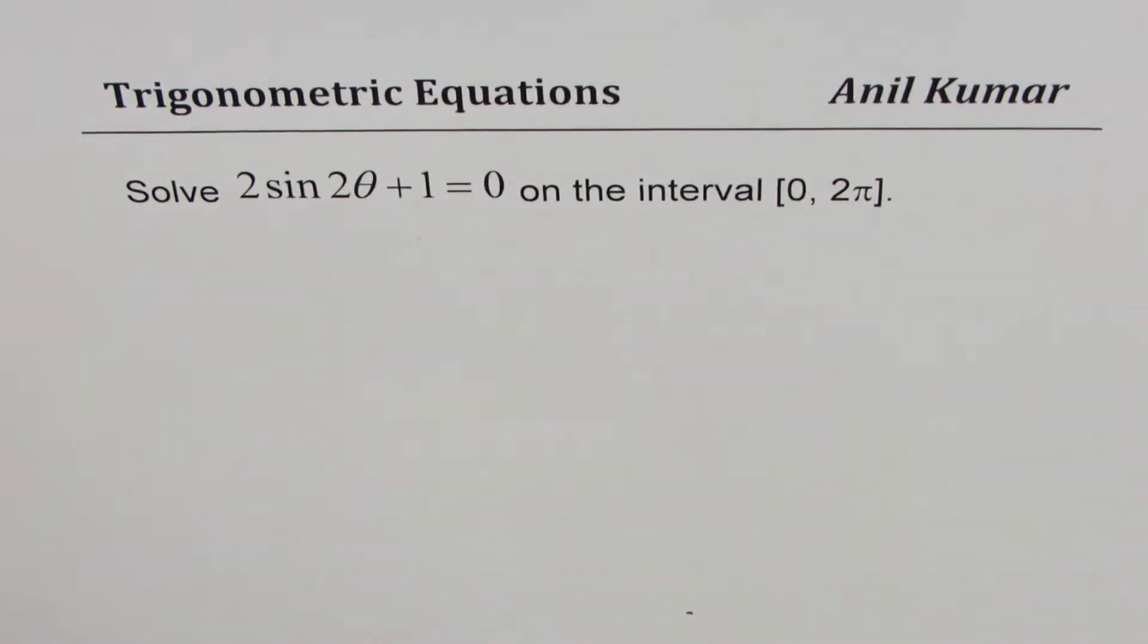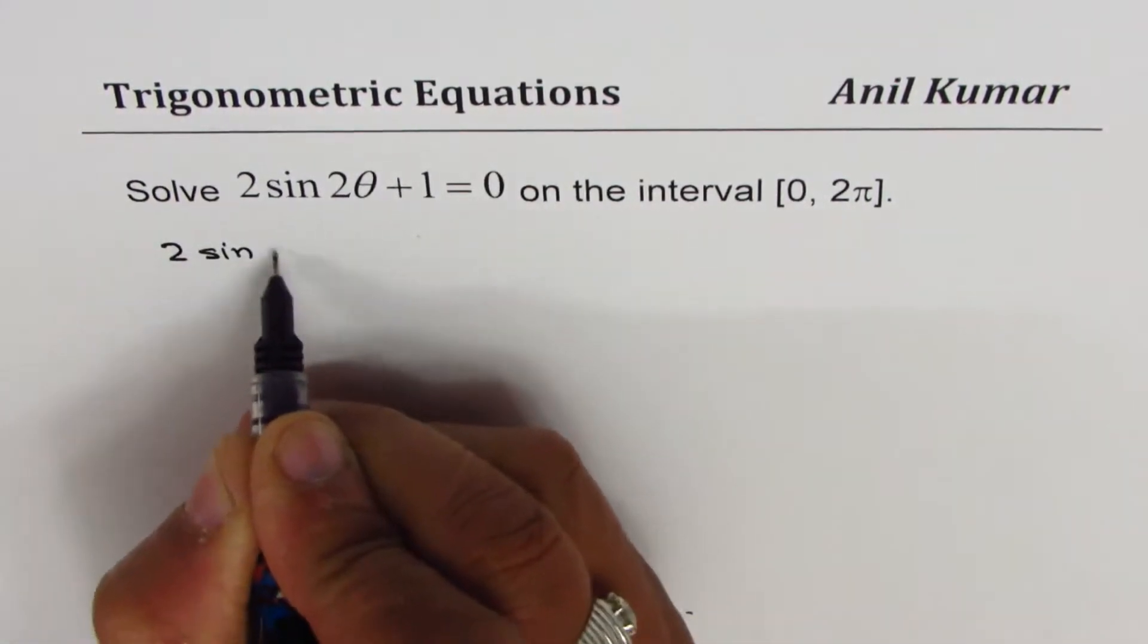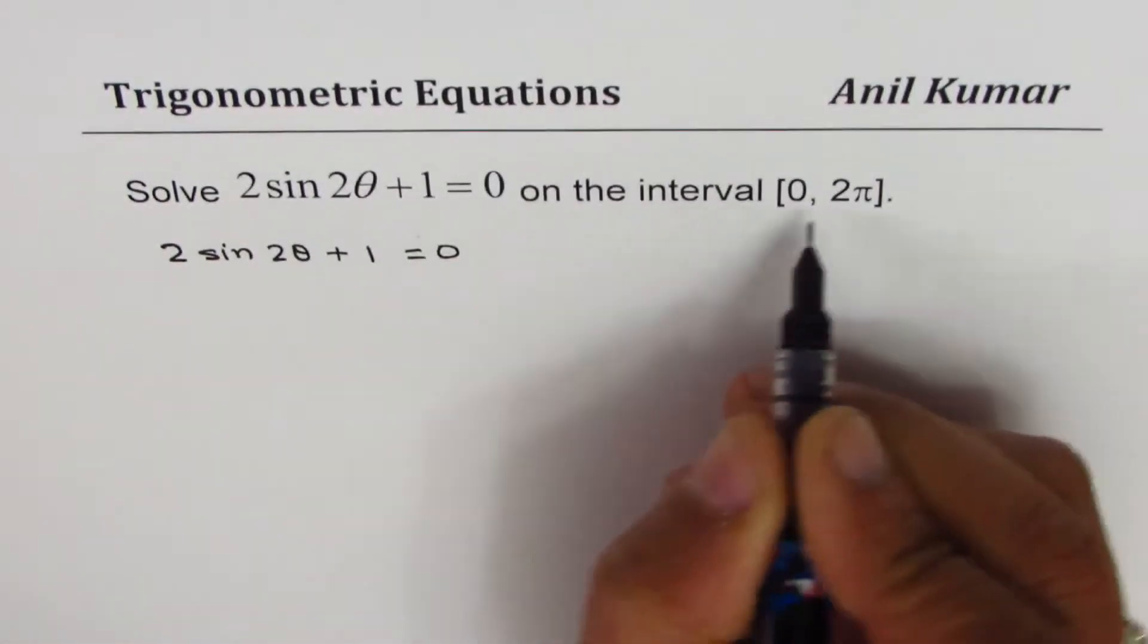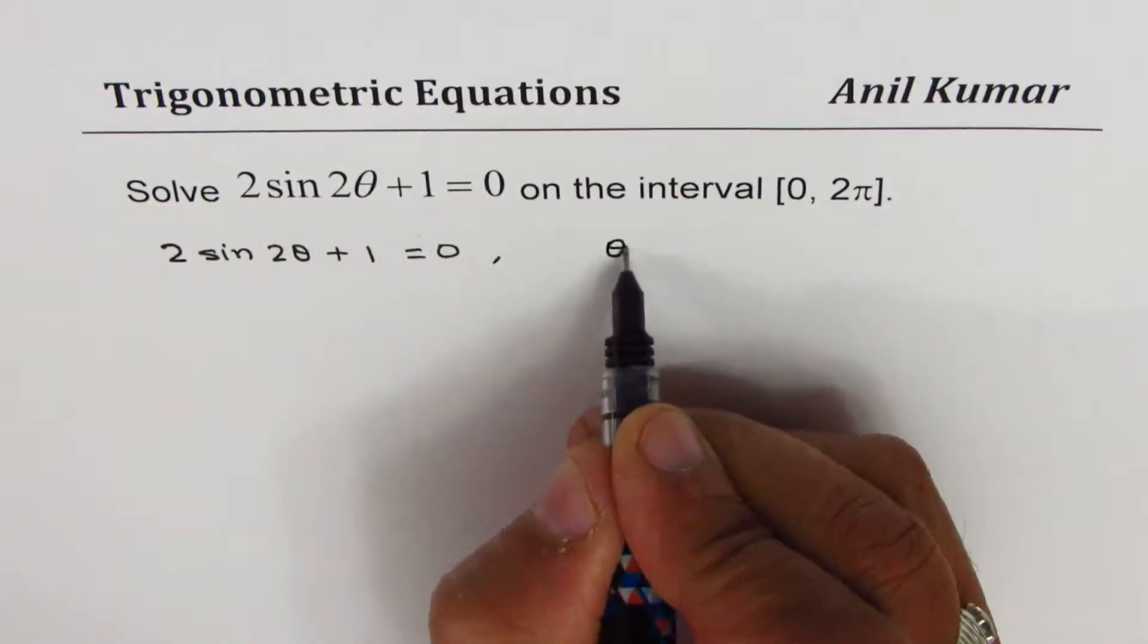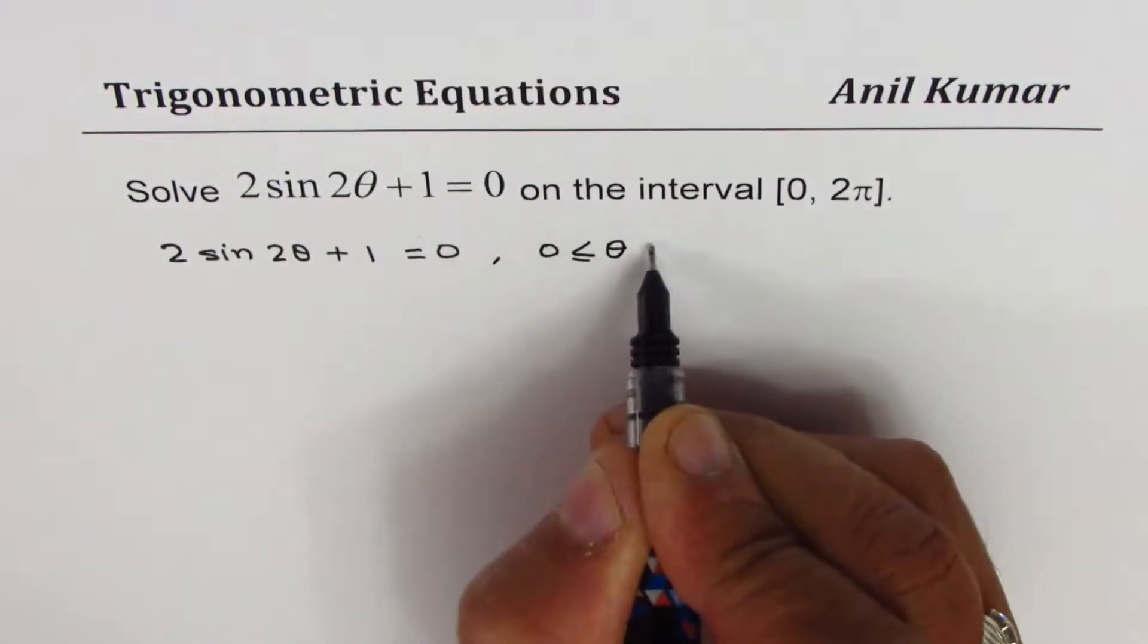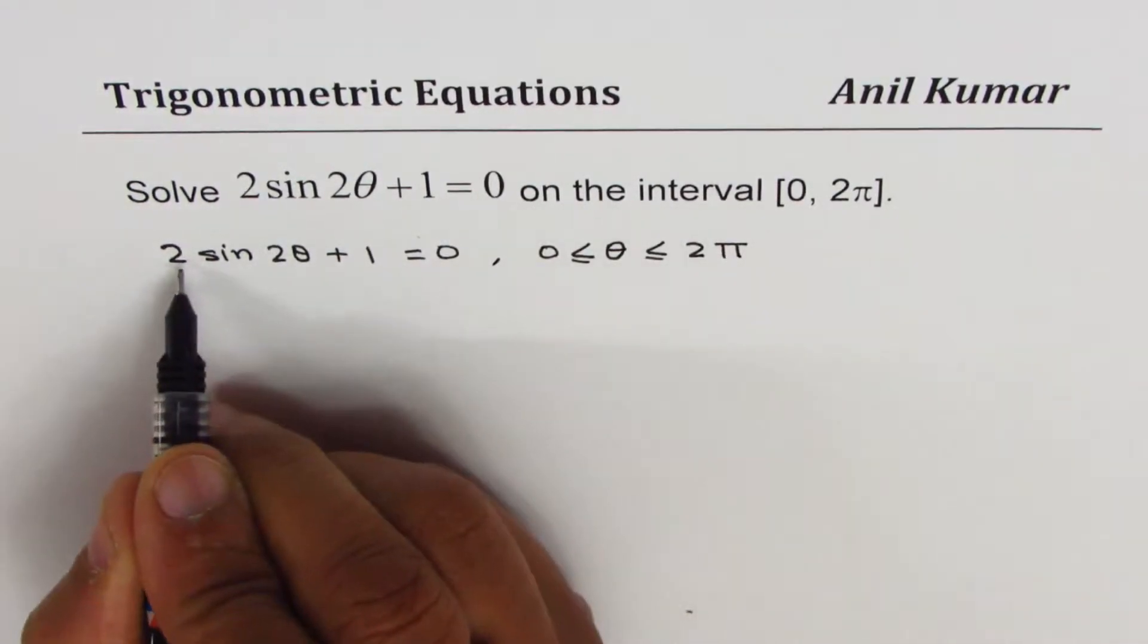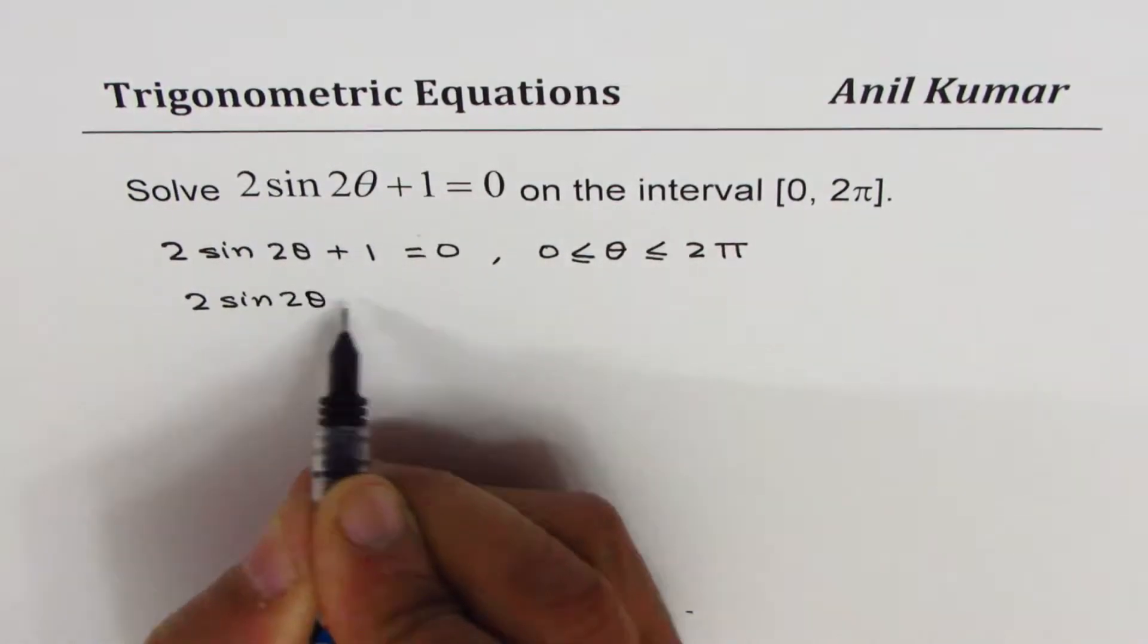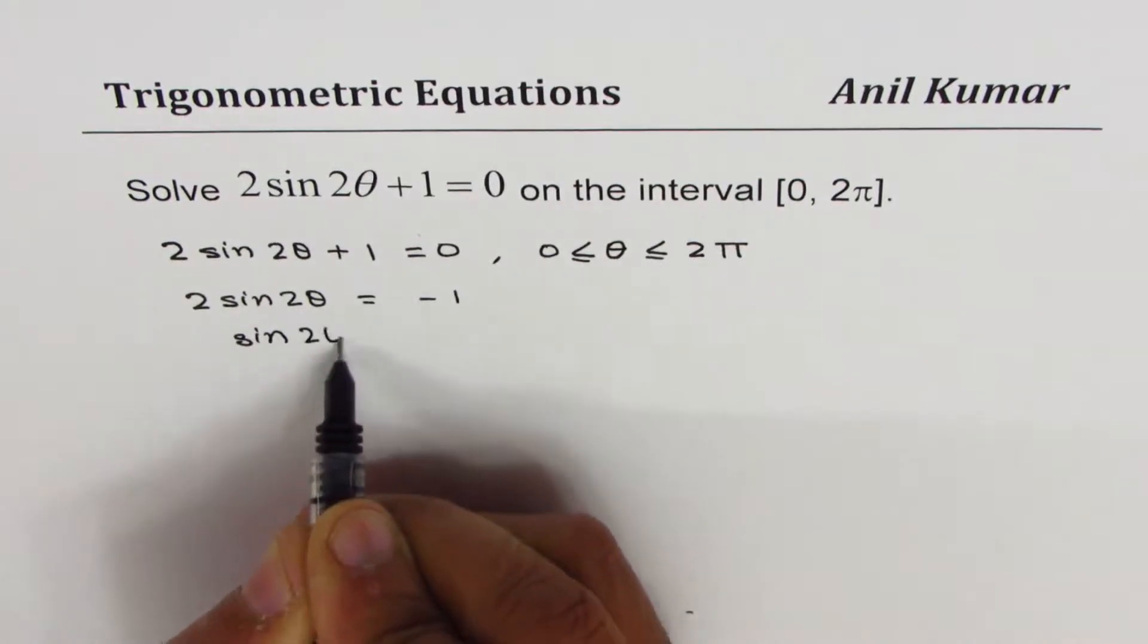The question here is 2 sin 2θ + 1 = 0. We are also given the domain, and the domain is that θ is greater than or equal to 0 and less than or equal to 2π.